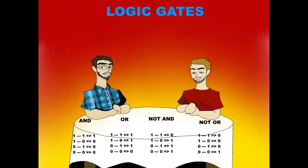AND gates can also apply to determining what you believe or if somebody's telling you the truth. Like a murder mystery — you have to have a specific piece of evidence AND another piece of evidence to determine who the killer is: the fingerprints AND the weapon. If you don't have either, it's very difficult to convict somebody. It helps defend you against false information — if somebody tells you something that's not true and an input is missing, that signal won't go out and you won't act on it.